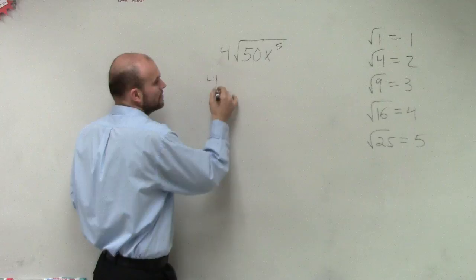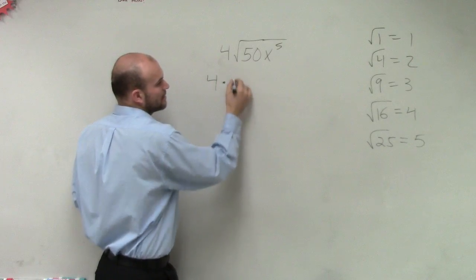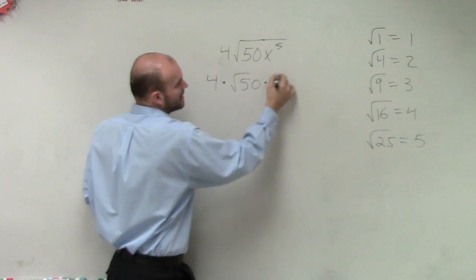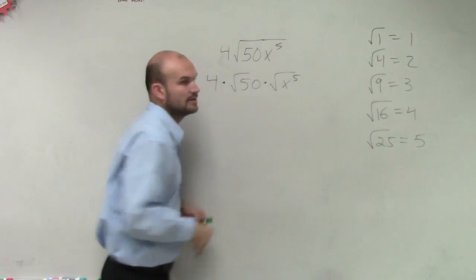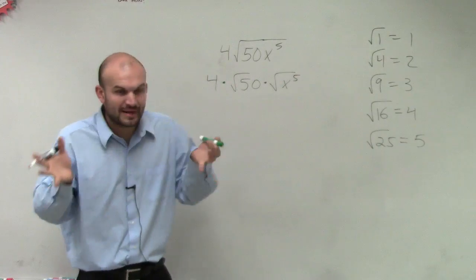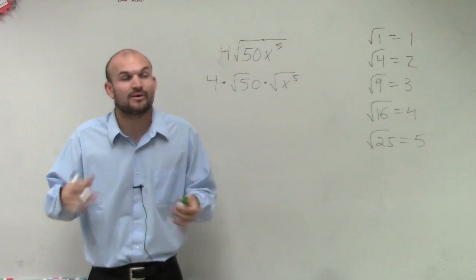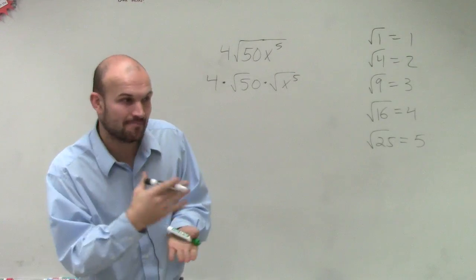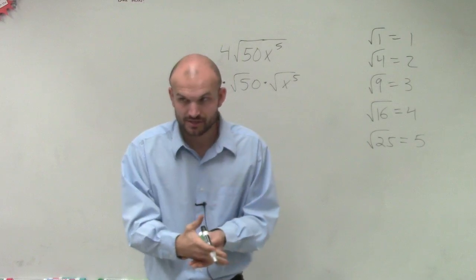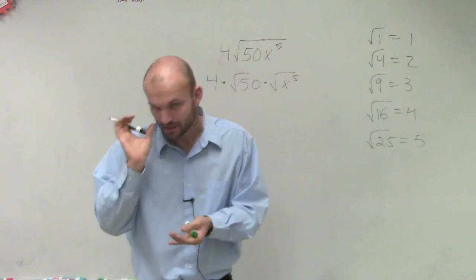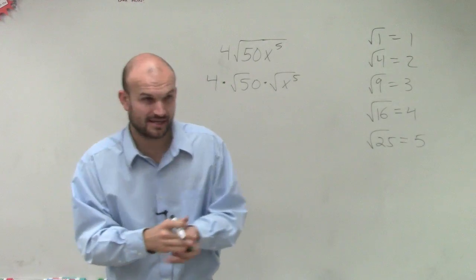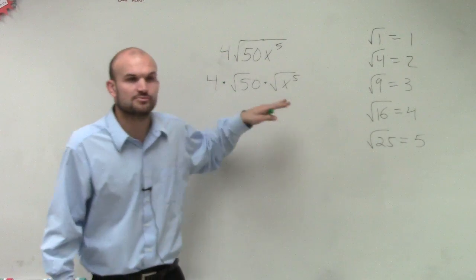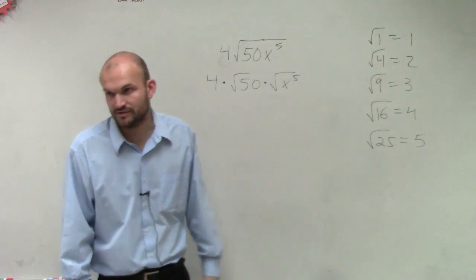I'm going to do 4 times the square root of 50, and we can break it up into the square root of x to the fifth. Remember, when we have the product — it has to be the product or the quotient. It cannot be addition and subtraction. I'll say it one more time because a lot of people make that mistake: you cannot separate under addition and subtraction, only under multiplication and division.